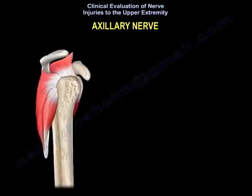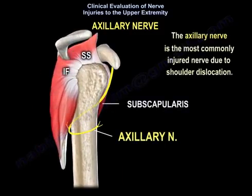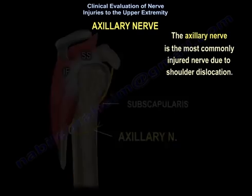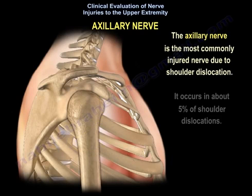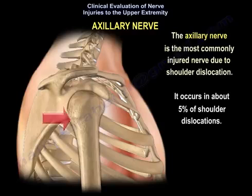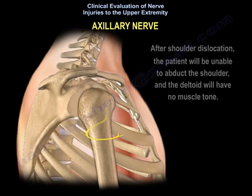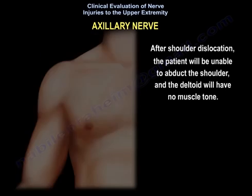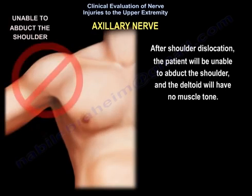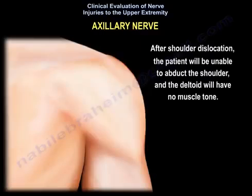The axillary nerve is the most commonly injured nerve due to shoulder dislocation, occurring in about 5% of cases. After shoulder dislocation, the patient will be unable to abduct the shoulder and the deltoid will have no muscle tone.